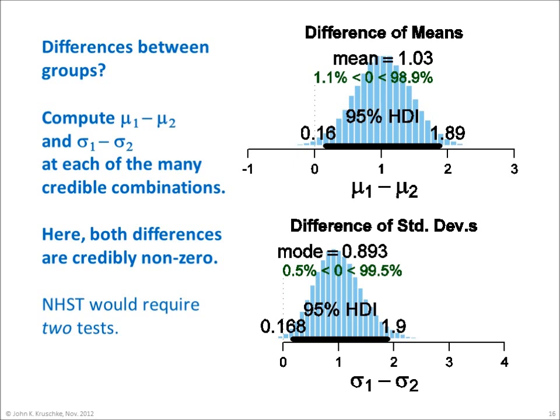When comparing two groups, we usually are interested in the magnitude of differences between groups. The MCMC chain provides a huge sample of credible differences. We compute mu1 minus mu2 and sigma1 minus sigma2 at each of the many credible combinations. The histograms here show the distributions of those credible differences. Here, both differences are credibly non-zero, because the 95% HDI clearly excludes a difference of zero. Notice that null hypothesis significance testing would require two tests and corrections for multiple testing, whereas Bayesian estimation provides both results simultaneously.